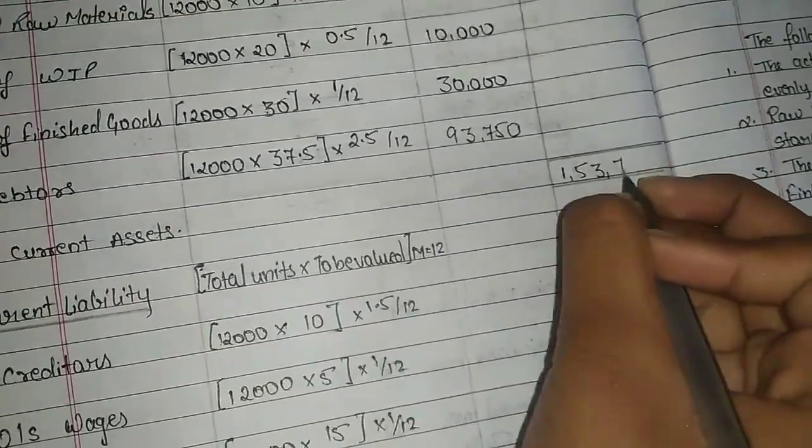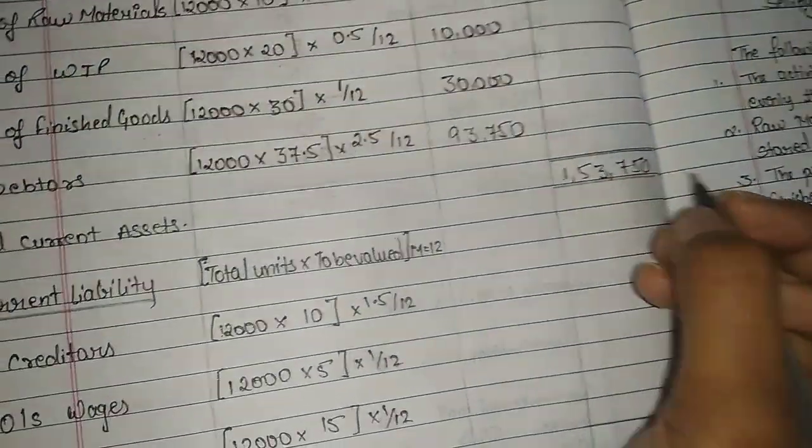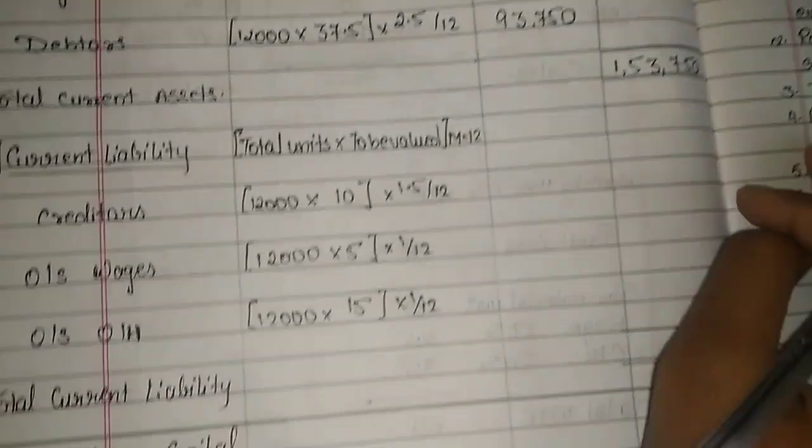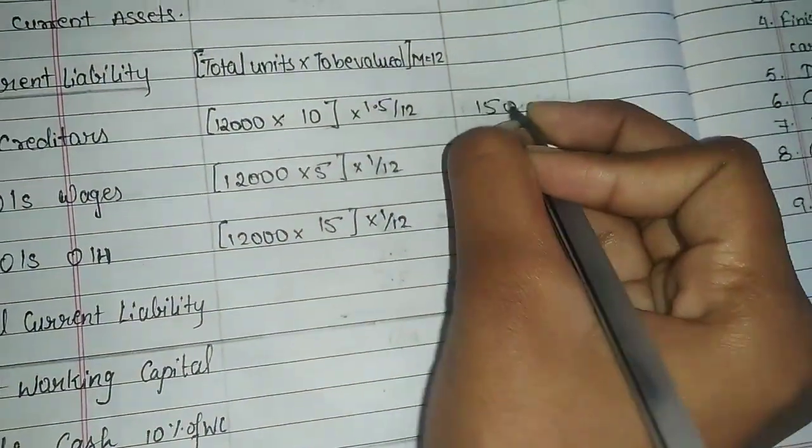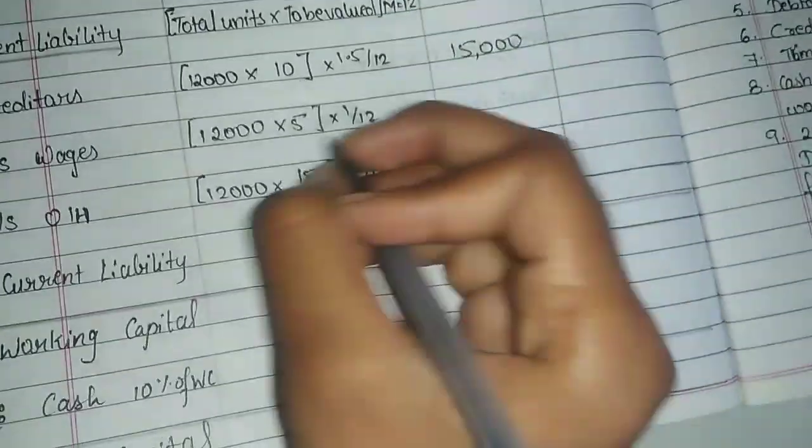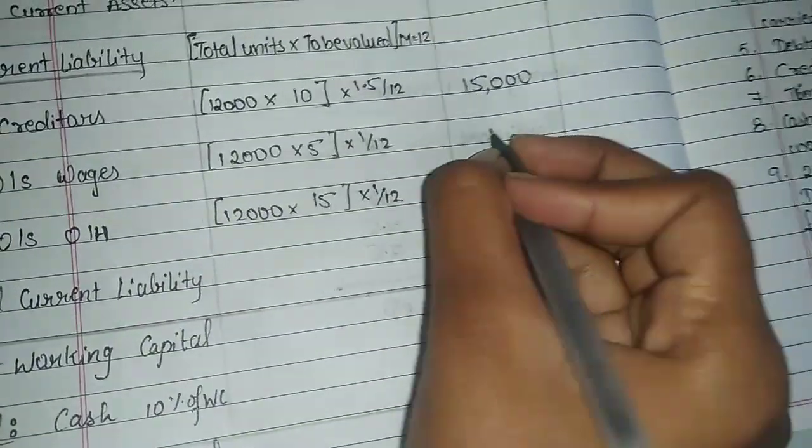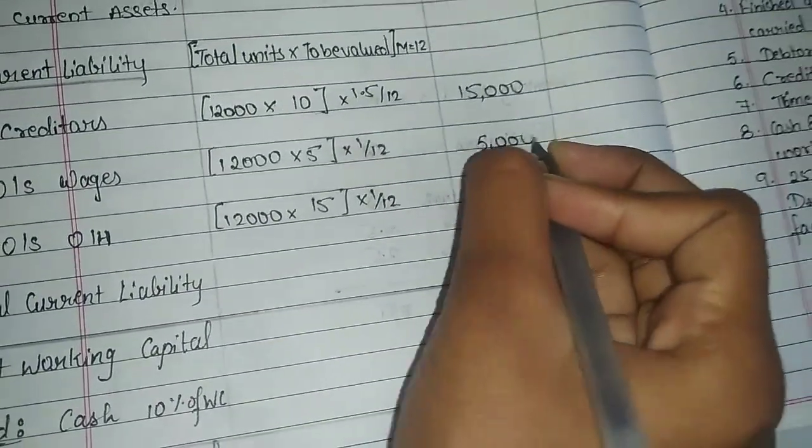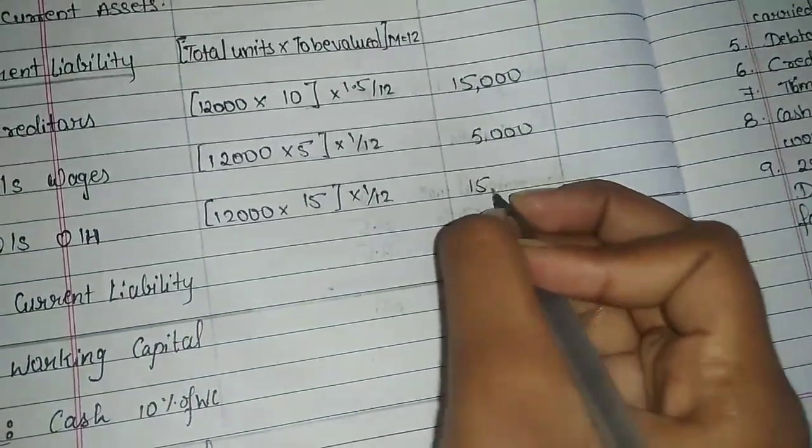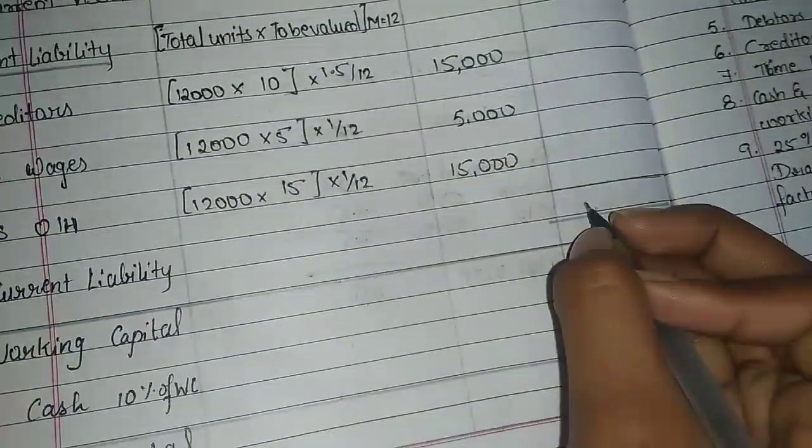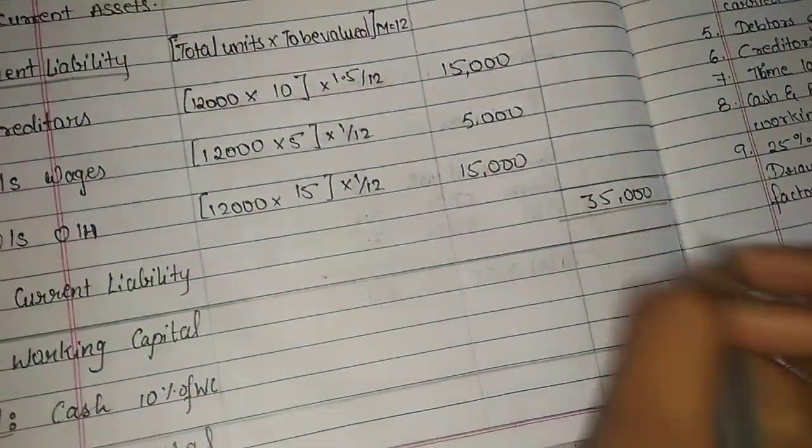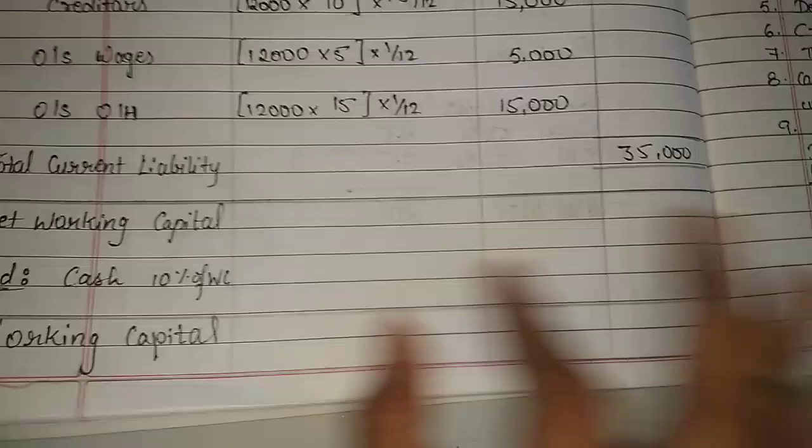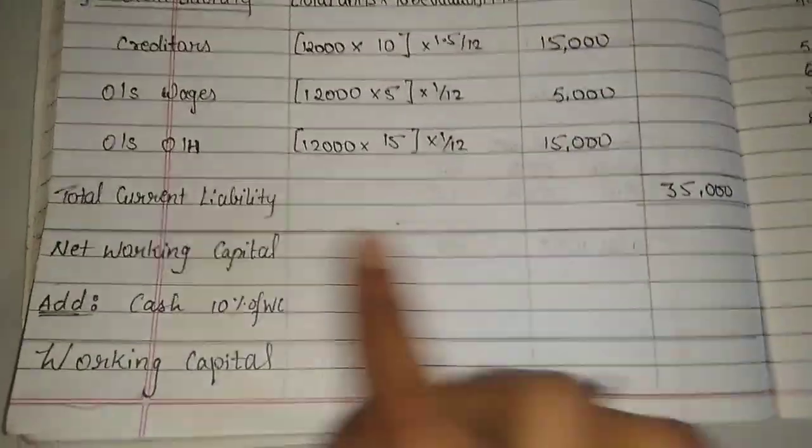Total current assets is 153,750. Now creditors 15,000, outstanding wages 5,000, and overhead 15,000. Total is 35,000.